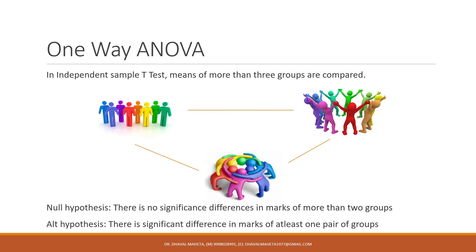In my previous video we discussed that when we are comparing means of two groups we use an independent sample t-test, but when the number of groups is more than two we cannot use t-test because doing so introduces more and more errors. So for this we use ANOVA, where we are comparing means of more than two groups. The null hypothesis is there is no significant difference in marks of more than two groups, but the alternative hypothesis is there is a significant difference in marks of at least one pair of groups.